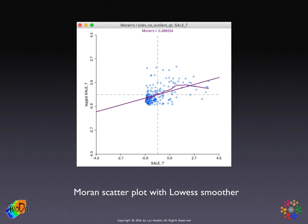The main things about the Moran scatterplot: it's a visual picture of Moran's I; it allows you to decompose global spatial autocorrelation into four subcategories; and through the LOWESS smoother — and also through linking and brushing — it allows you to identify potential structural breaks that would correspond to spatial heterogeneity.